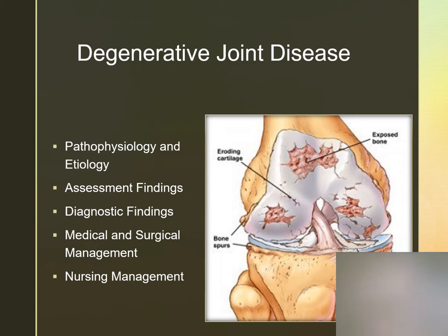These clients are going to have stiffness, pain, they may have painless nodules or Heberden's nodes, a limited range of motion, and crepitus. We diagnose with radiology and we can also do an ESR. These clients are going to benefit from rest, immobilization of the joint, exercise programs, TENS units, drug therapy, and joint replacement surgery.